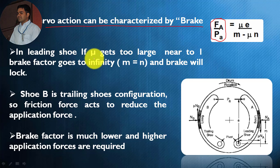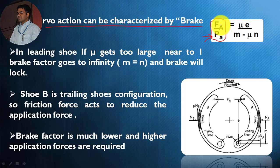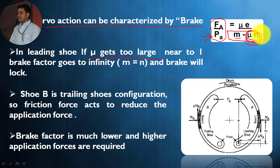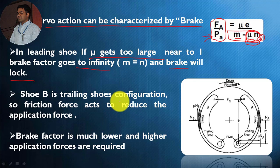In the leading shoe, if mu gets too large — looking at the equation for shoe A where Fa indicates the mechanical advantage for the leading shoe — if mu gets too large, the brake factor goes to infinity. If mu gets too large, the value of mu times n tends to become equal to m, and that's why the denominator becomes zero and the whole value for the brake factor leads towards infinity. If such a case occurs, the brake will lock.